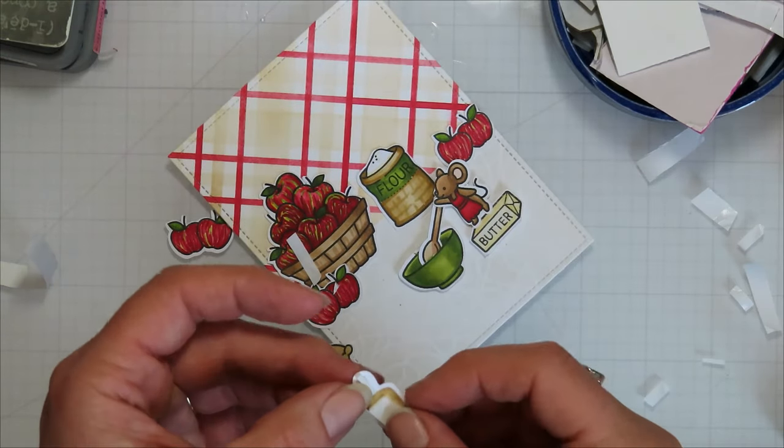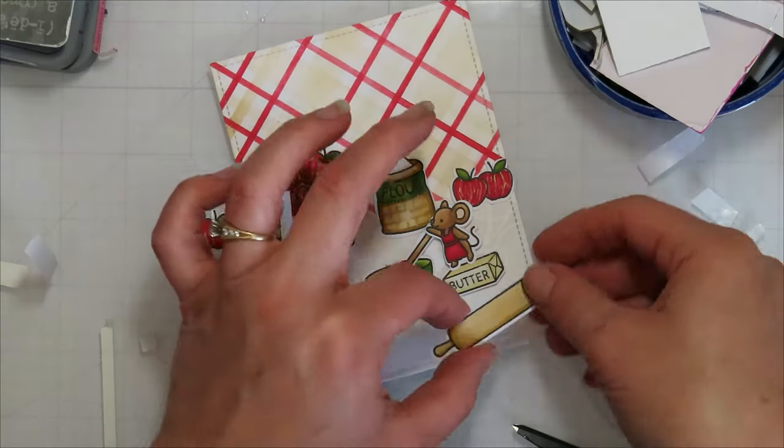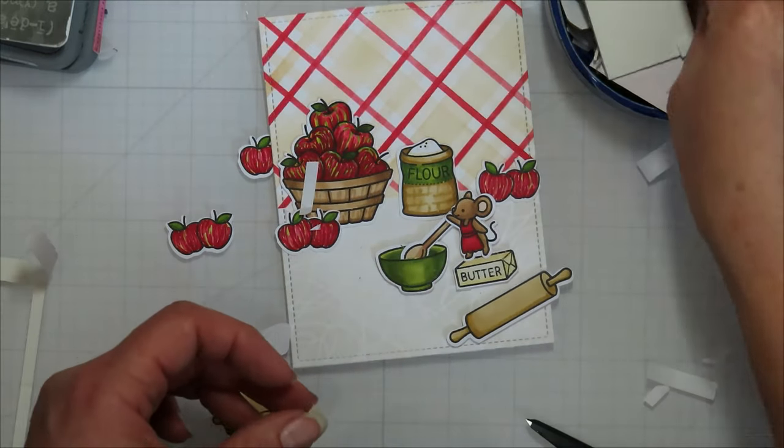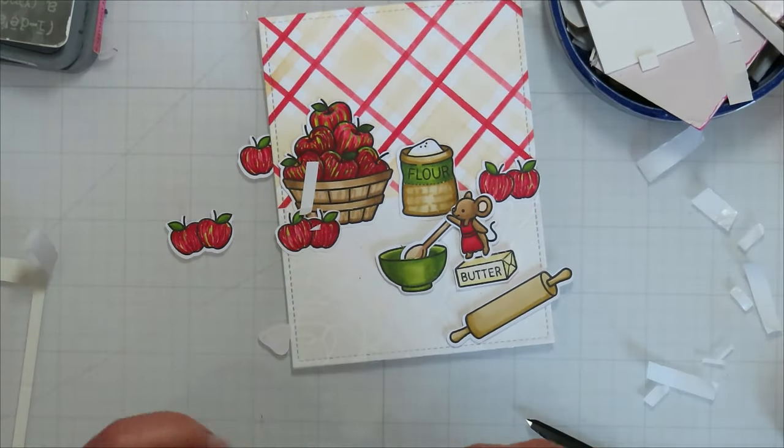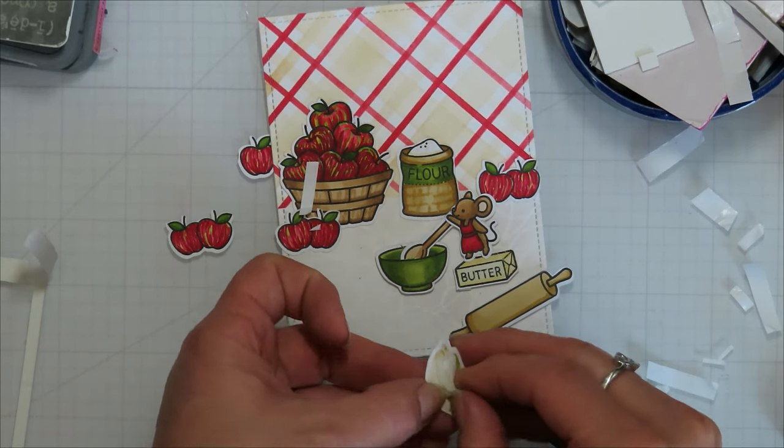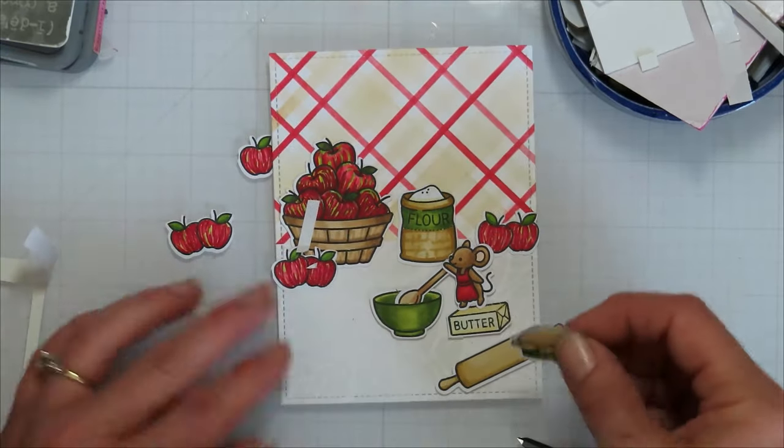So I'm bringing in the rolling pin and I'm going to let that one sit off the side of the page. So my first layer, which was the apple basket and the flower and the apples, is glued flat down. And then everything that came in after that, I decided to pop up just because once I popped up the mouse and the bowl, I decided I needed to pop up everything else just because how it sits on the counter on your card, it would be closer to you. It's popped up.